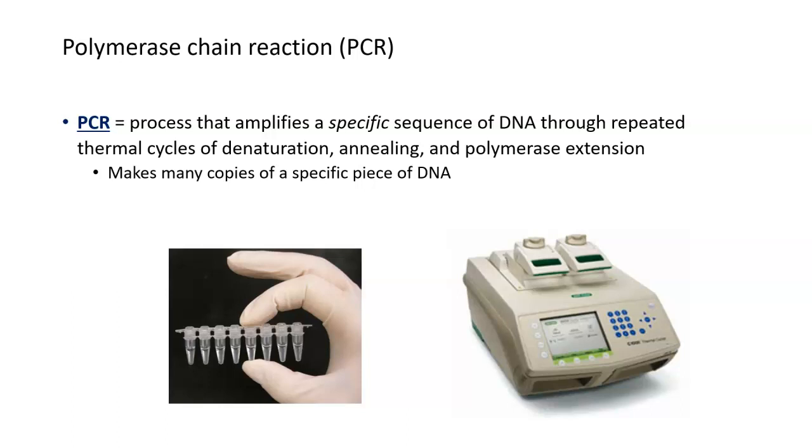By understanding the principles of how DNA replication works and what enzymes are involved, we can create a similar reaction to DNA replication that allows us to create many copies of a very specific sequence. This reaction is called a polymerase chain reaction or PCR. PCR is a process that amplifies or makes many copies of a specific sequence of DNA through repeated cycles of denaturation, annealing, and extension.